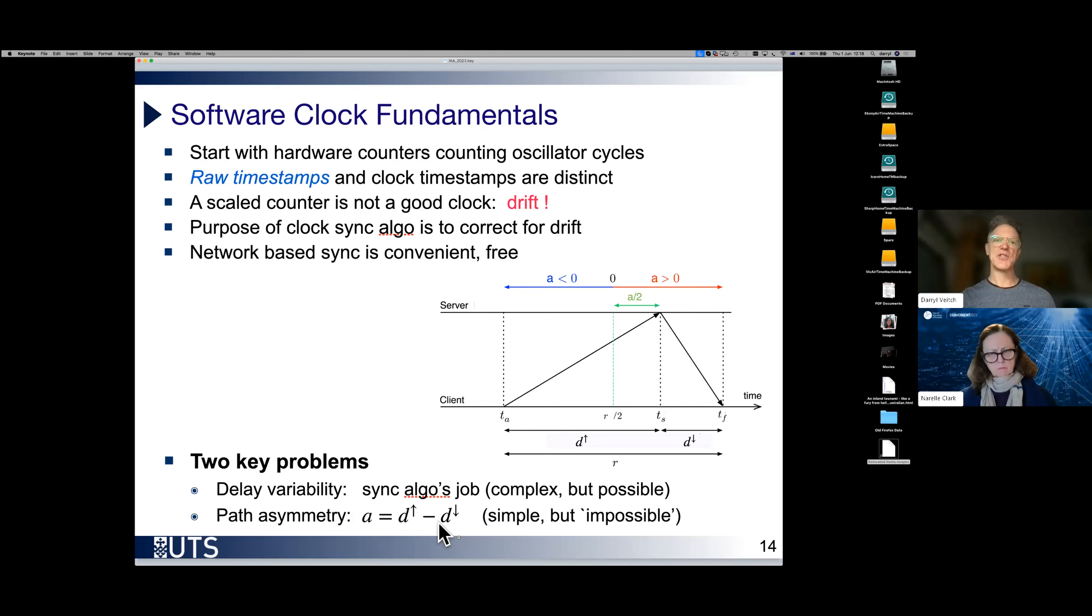Path asymmetry is the fact that the paths are not the same. The underlying minimal delays in each direction are not the same. Correcting for that is, in a sense, fundamentally impossible in fact. But it can be managed. It can be mitigated. And we'll talk more about that. So these are fundamentals.